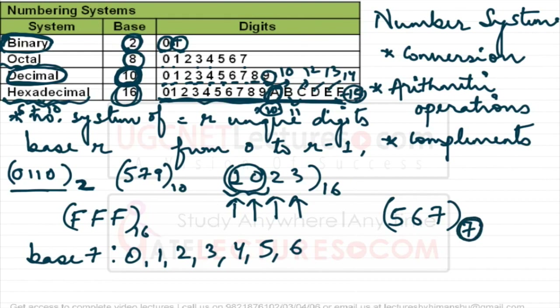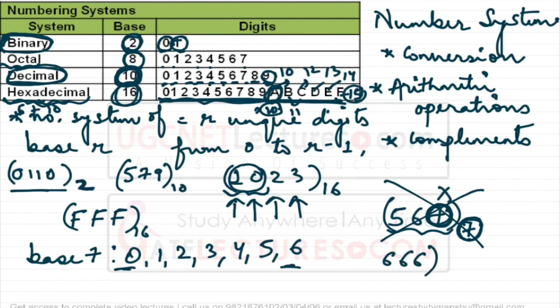The digit 7 cannot be present in a base-7 number system. The only valid digits are 0 to 6. The largest possible three-digit number in base 7 would therefore be 666.